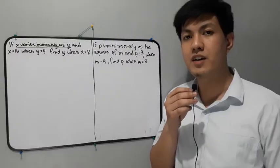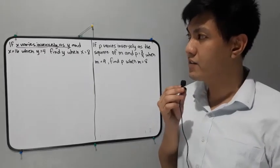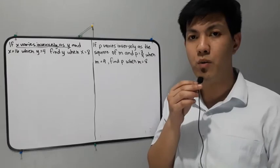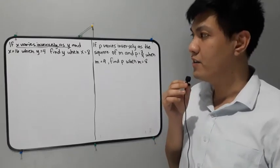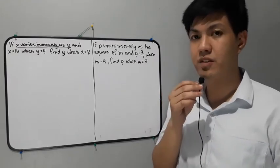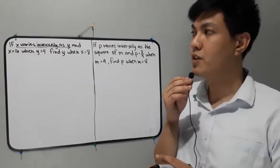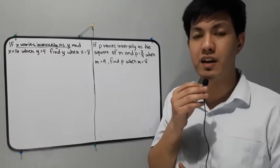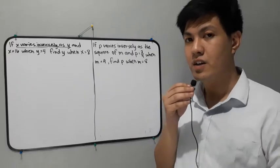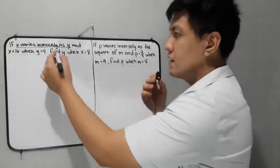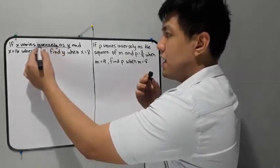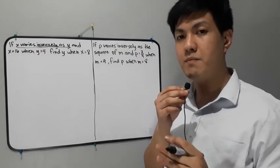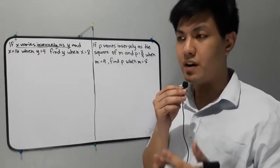Let's have another example. If x varies inversely as y and x is equal to 16 when y is equal to 4, find y when x is equal to 8. The first thing we have to do is identify if the given is direct variation or inverse variation. Based on the statement, we have the word 'inversely,' so therefore the given statement here is inverse variation.